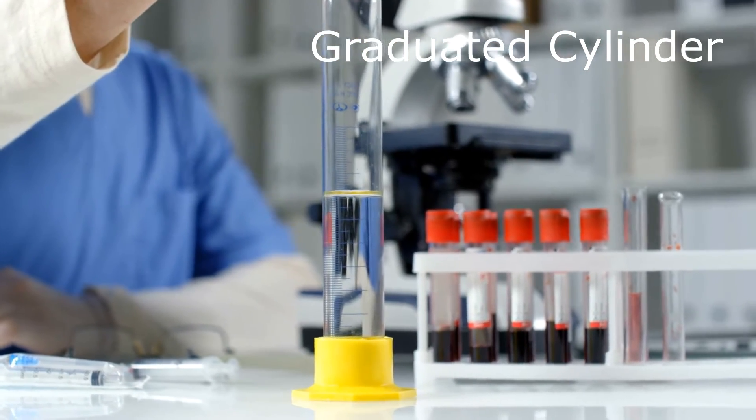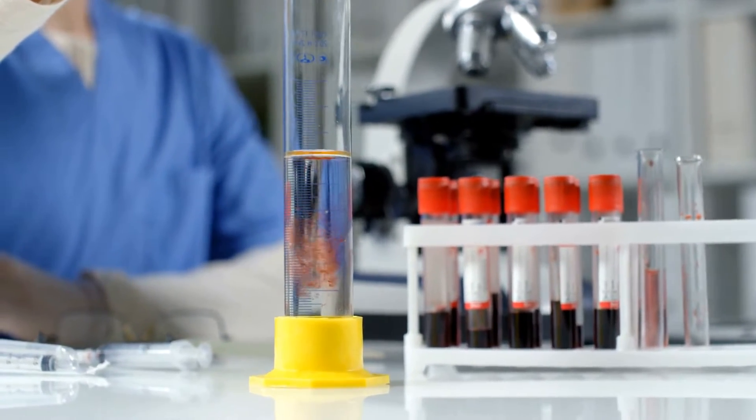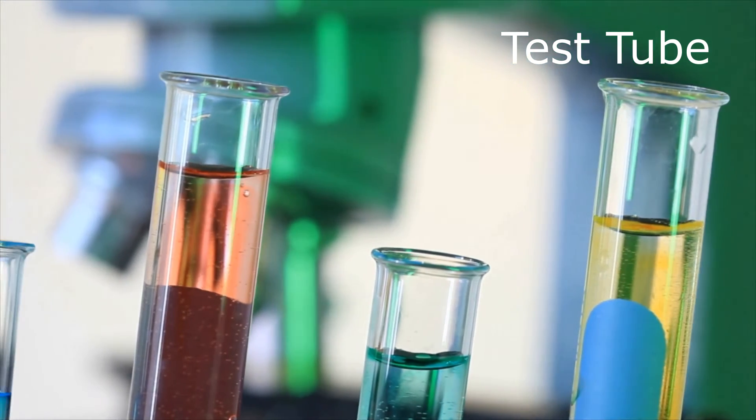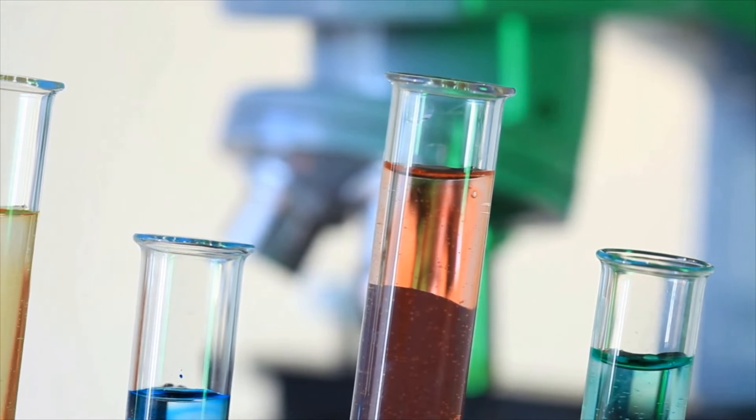Graduated cylinders are, as the name suggests, tall glass cylinders with regular markings. A test tube is a small cylinder of glass, usually three to four inches long, open at the top and closed at the bottom.